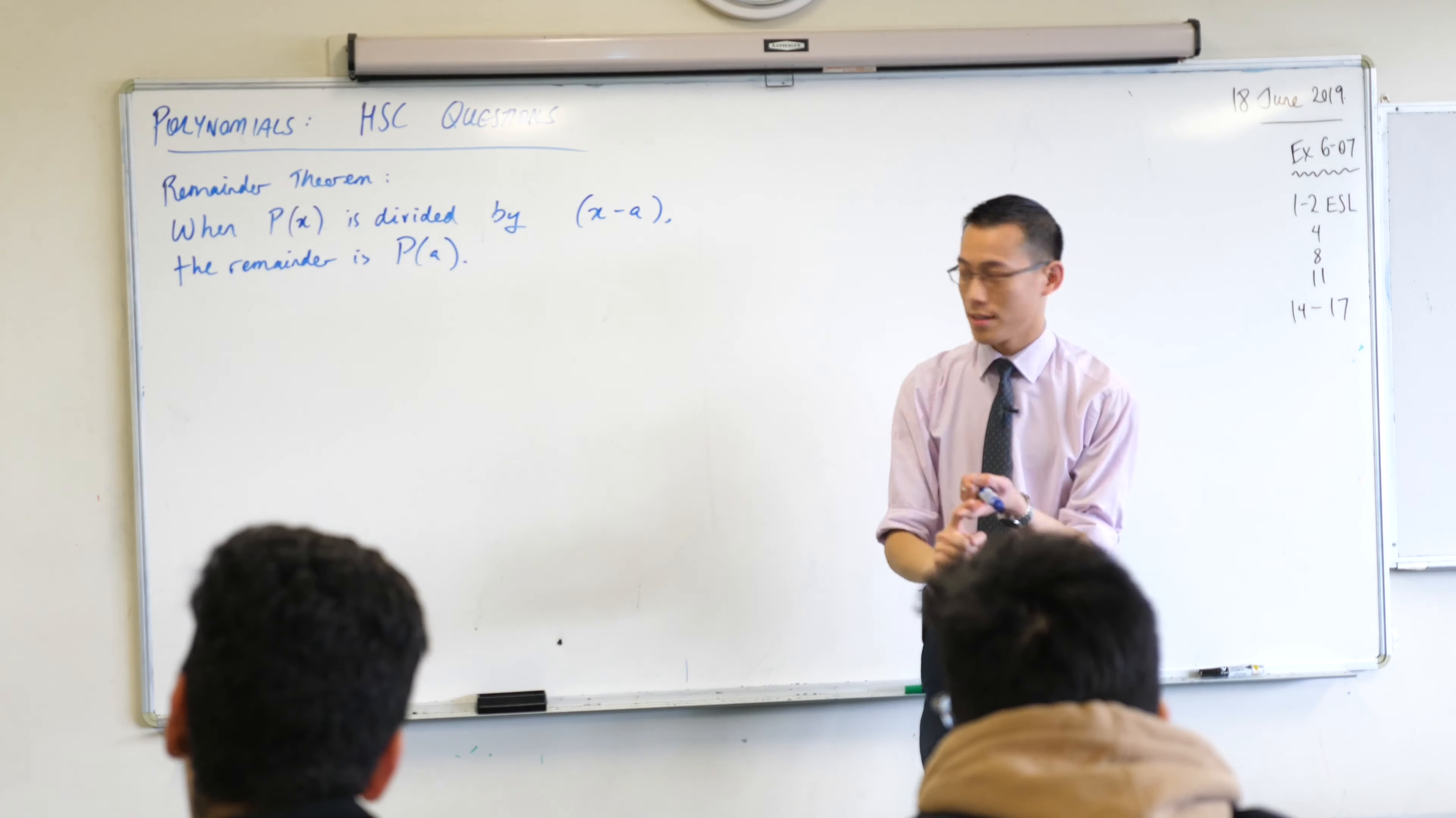Importantly, in the question they provide you two remainders. They say when you divide by (x+1), they give you a remainder of negative 11. And then when you divide by (x-3), you get a different remainder - it's 1. We can use both of these facts to unpack both parts of the question.